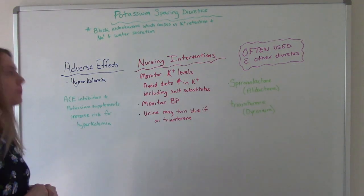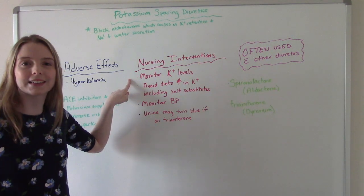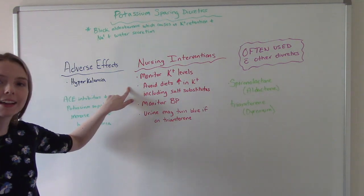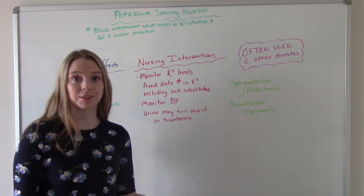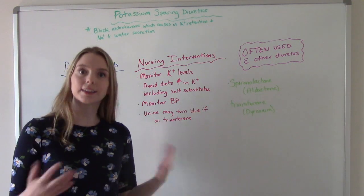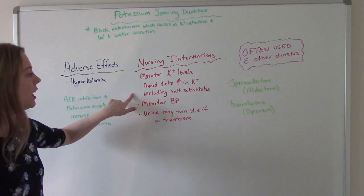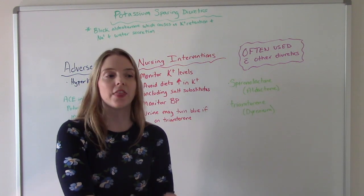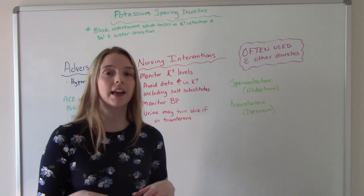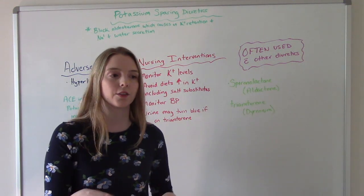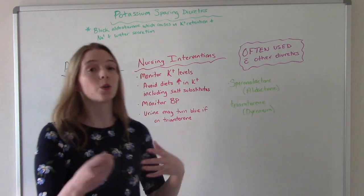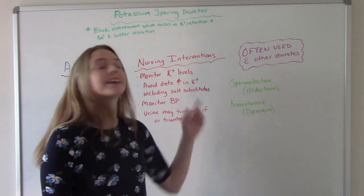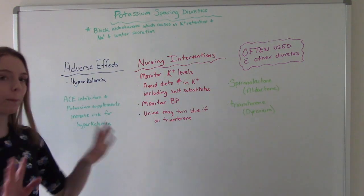Nursing interventions include monitoring potassium levels and ensuring they stay in a normal range — not too high. Patients should avoid diets high in potassium, which is the opposite advice from the other two diuretic types. This also includes avoiding salt substitutes, because many people — such as those with heart failure or CHF — are told to use salt substitutes, but those substitutes contain potassium. So this is very important patient teaching.